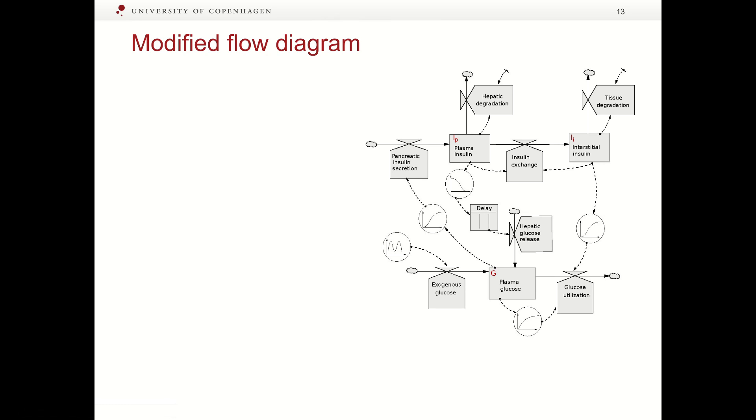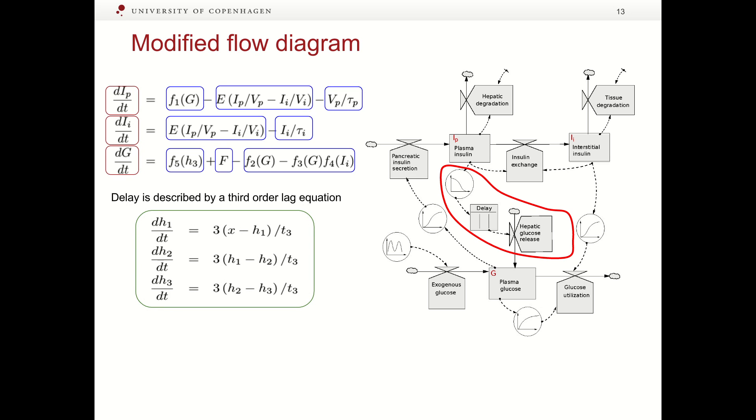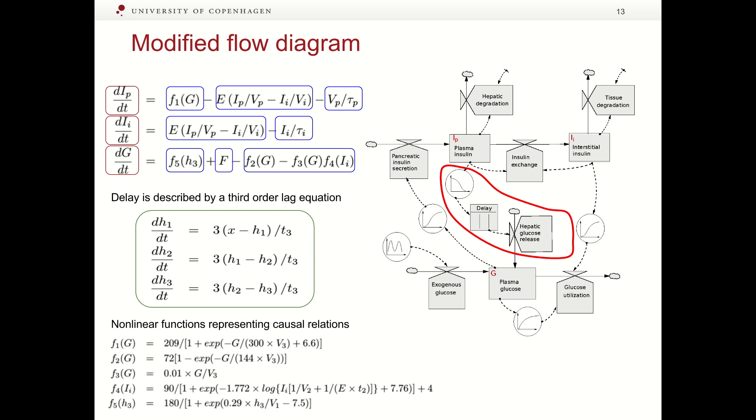The structure, inscribed in red, is a new suggested structure. To formulate a mathematical model, we should write a differential equation for each state variable. The first equation describes changes in the amount of plasma insulin, taking into account insulin secretion, insulin exchange with interstitial space, and hepatic degradation. The second equation describes changes in the amount of interstitial insulin, taking into account insulin exchange with interstitial space, and tissue degradation. The third equation describes changes in the amount of plasma glucose, taking into account hepatic glucose release, glucose uptake, and glucose consumption. Model includes also delay of hepatic glucose release, described as the third-order lag equation. There are several non-linear functions representing causal relations.